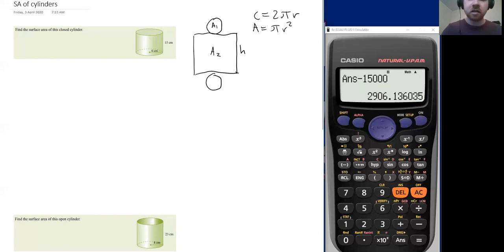And then this length here is going to be the circumference because it's the one that wraps around the edge. So that length of the rectangle is going to have to be 2πr.